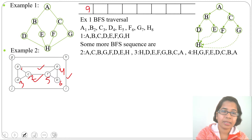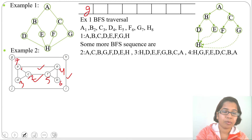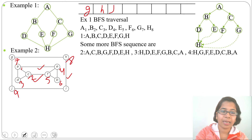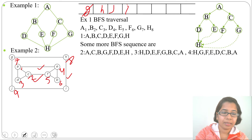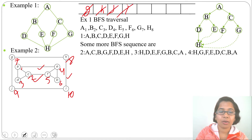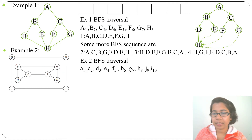We insert G into the queue with number 7. From G we can visit H and J — both are adjacent — so we insert H and J with numbers 8 and 9, then delete G. Next, H's adjacent is I, so we insert I with number 10 and delete H. J's adjacents are all already visited so we delete J. I's adjacents are all already visited so we delete I. BFS traversal is now done.